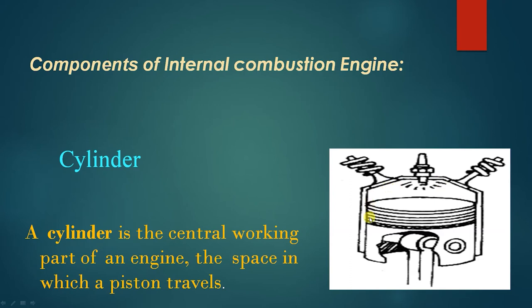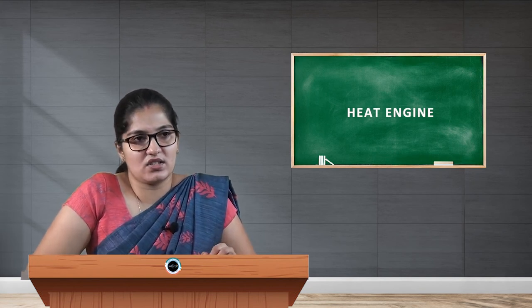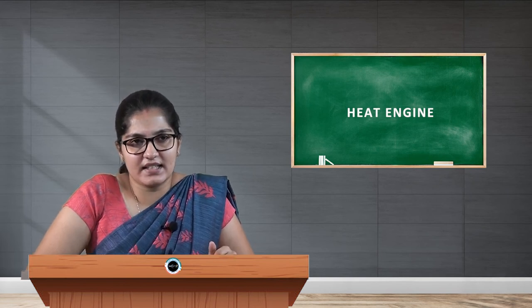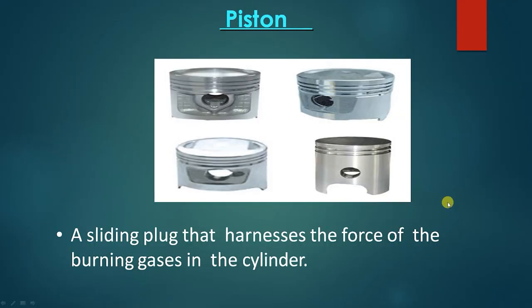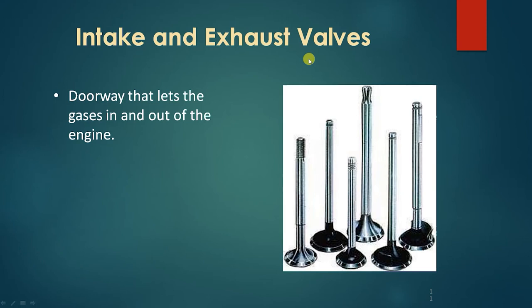The cylinder is the central working part of the engine — the space in which the piston moves. The next part is the piston, which is a sliding plug that harnesses the force of the burning gases in the cylinder. Other components are intake and exhaust valves. The intake valve is on the left and the exhaust valve is on the right, forming a doorway that lets gases in and out. The intake valve admits the fuel inside the chamber and the exhaust valve scavenges the burnt gases out into the air environment.